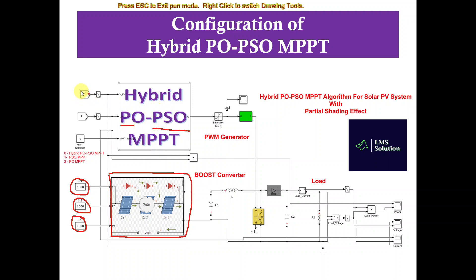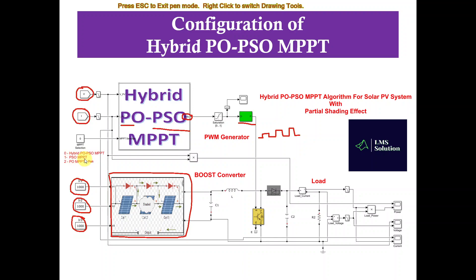The PO-PSO MPPT receives two inputs: PV panel voltage and PV panel current. Based on the PV panel voltage and current, it generates a duty cycle. This duty cycle is processed via a PWM generator, which generates pulses for the IGBT in the boost converter to control the power flow and extract the maximum power under partial shading as well as normal irradiation conditions. This model can be operated in three modes: hybrid PO-PSO, PSO-MPPT, and PO-MPPT.